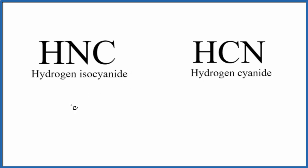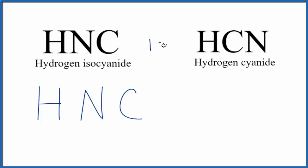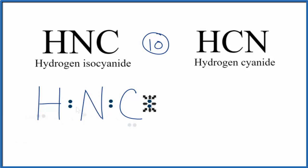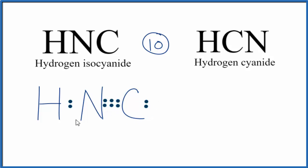Let's draw the Lewis structure for HNC. First, write the elements in the order they're written: H-N-C. If we count our valence electrons, we have ten. We'll put a pair of electrons between atoms to form the chemical bond, then complete the octet on the carbon — that uses all ten valence electrons. Carbon is fine, hydrogen is fine, but nitrogen is not. We can move two electrons to form a double bond; carbon still has eight, nitrogen has six. So we'll need a triple bond — moving electrons gives us the Lewis structure for HNC.